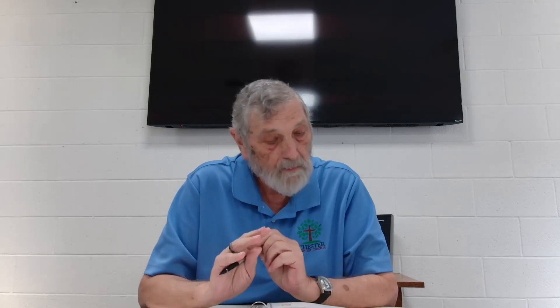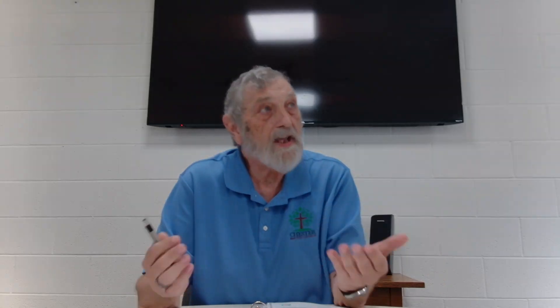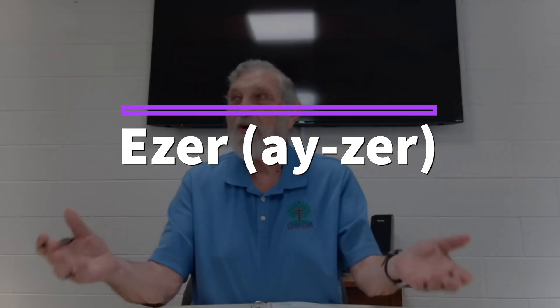The key word in Genesis 2:18 is helper: 'The Lord said, it is not good for the man to be alone. I will make a helper suitable for him.' The Hebrew word is Azer. Can you say Azer? Azer appears 21 times in the Old Testament and can mean helper or help. It can also mean ally or protector. As a husband, I am a protector of my family — I feel that's an important idea — but I'm also a helper with my family. How do we differentiate between those meanings if the word means the same thing?